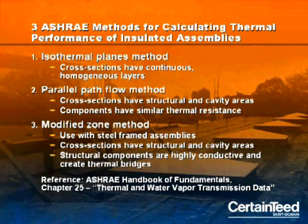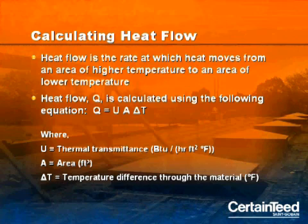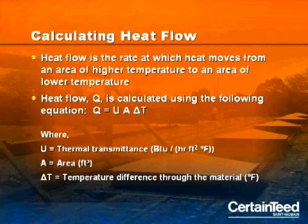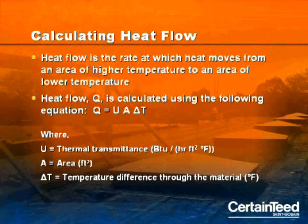We're going to look at each of the three methods for calculating thermal performance of assemblies in a moment. But first, here are some points to remember when calculating or reviewing heat flow data. Heat flow is the rate at which heat moves from an area of higher temperature to an area of lower temperature. The equation for calculating heat flow is this, where U is thermal transmittance expressed in these units, A equals area in square feet, and delta T equals temperature difference through the material in degrees Fahrenheit.